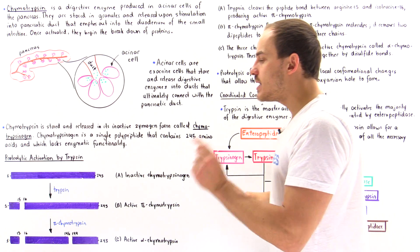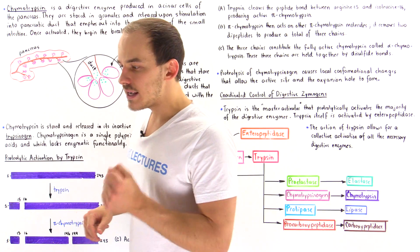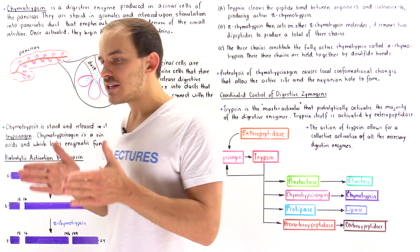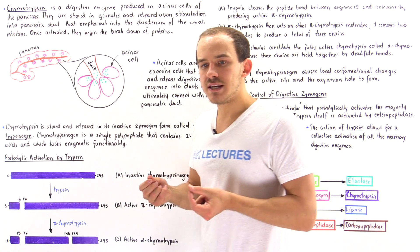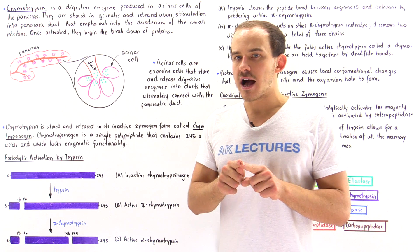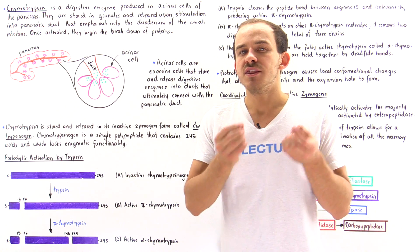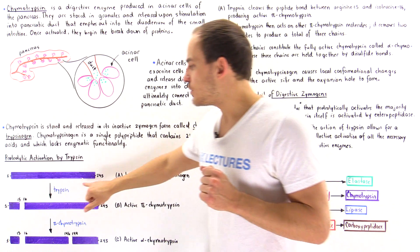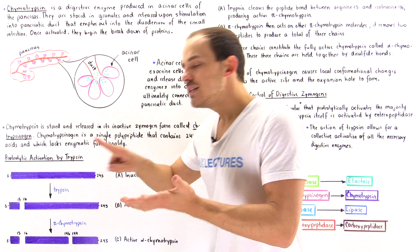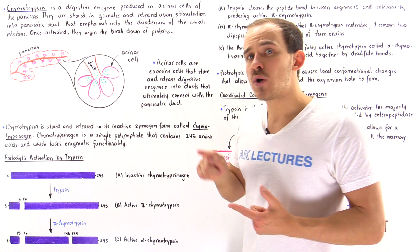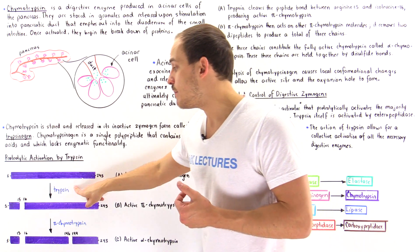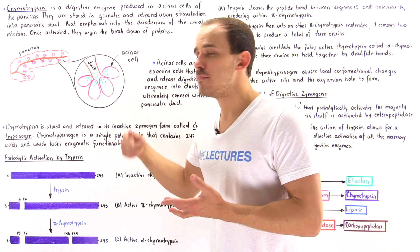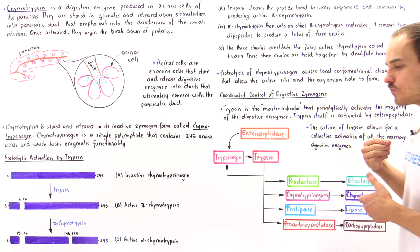Chymotrypsin is only one of many different digestive enzymes inside our body. Each digestive enzyme has a slightly different specificity, and we need all of them to cleave the many different peptide bonds found within the proteins we ingest. Interestingly, trypsin doesn't only activate chymotrypsinogen — it also activates many other zymogens, making trypsin the master activator responsible for activating the majority of zymogens in our body.